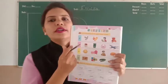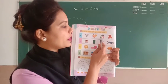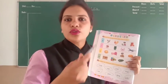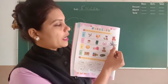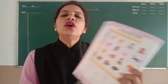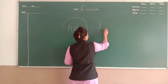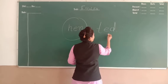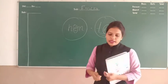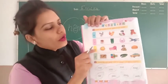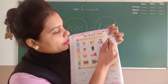यह बच्चा है जो dustbin में कचरा डाल रहा है - तो 'throw' में तो E नहीं आता। तो next देखना है - यह teddy है। तो teddy लिखते हैं तो उसका spelling है T-E-D-D-Y, तो E दोनों में आता है। तो आपको E पे - यहाँ पे hand और यहाँ पे teddy पे circle करना है।